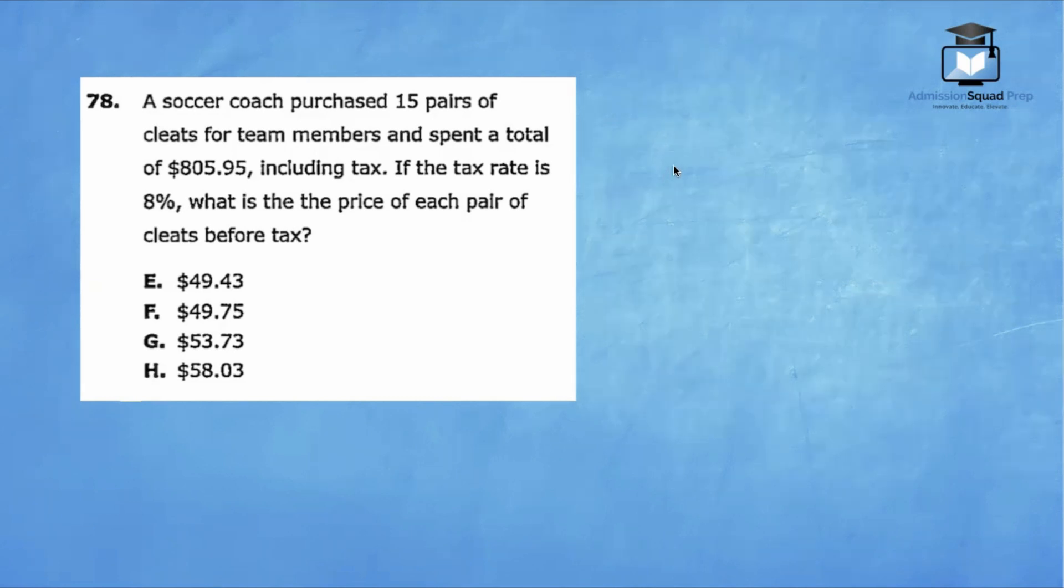This means that $805.95 includes the 8% tax. We can set up a proportion here: 108 over 100 equals 805.95 over X. This means that $805.95 represents the total cost plus the 8% tax. We want to figure out the price before the tax was added. That's going to be our unknown variable. Let's cross multiply.